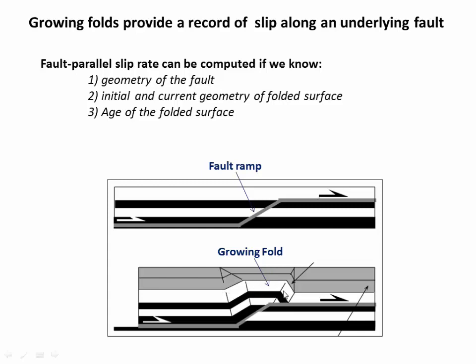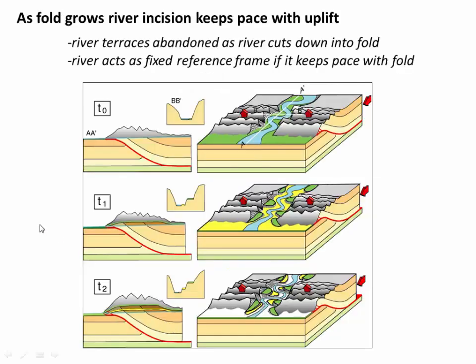If we know how that geometry has changed, and if we also know the age or the time over which that geometry changed, we can use all three of those things to solve for the slip rate on the underlying fault. In this video, we're going to work through an example of how we would use folded river terraces to actually estimate the slip rate on the underlying fault.